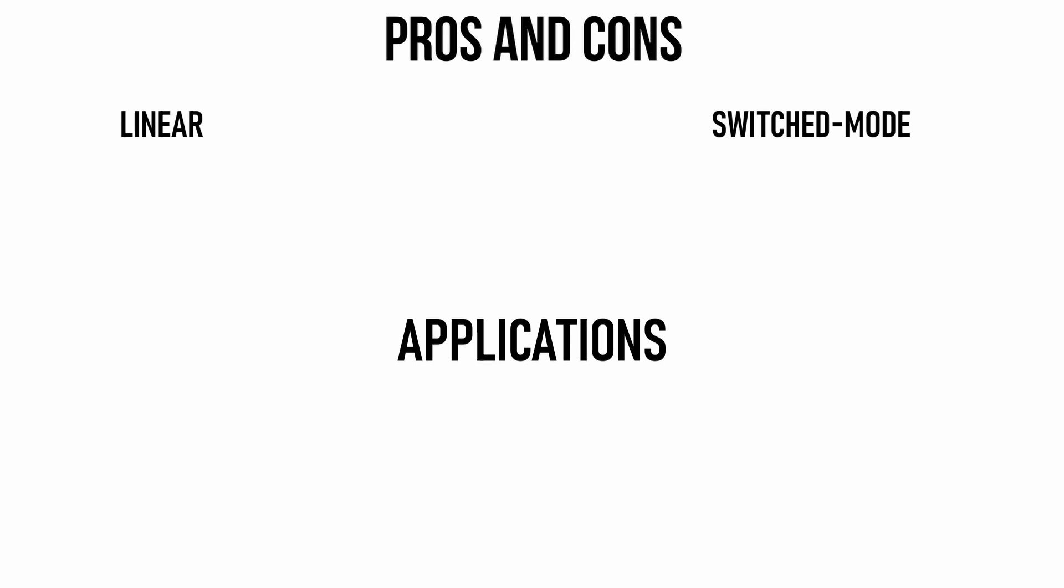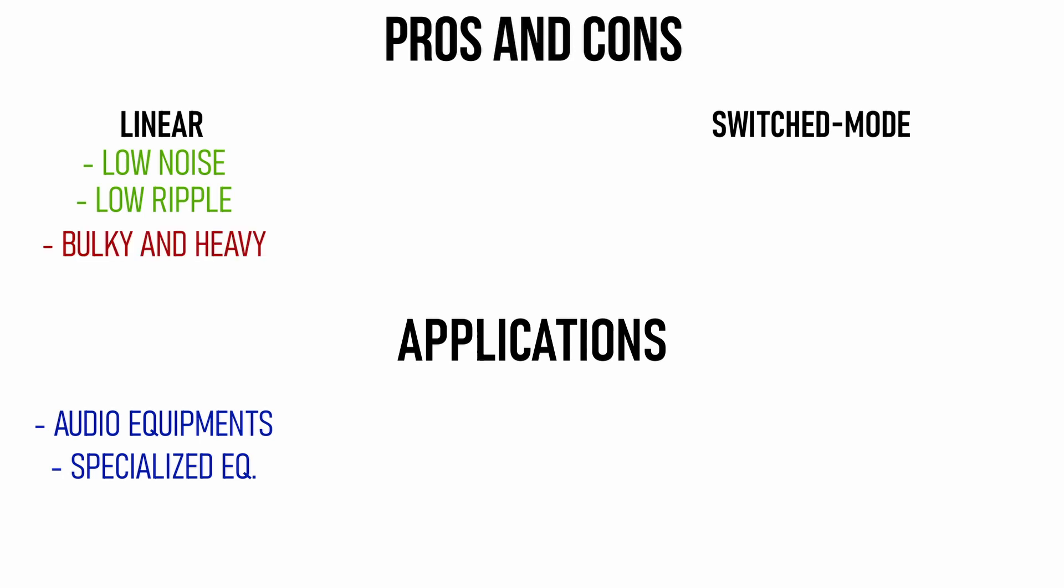So let's see the pros and cons and the applications for each of these power regulation modes. Linear power supplies were in use in every kind of equipment before the switch mode power supplies. And they are still preferred today because of their low noise, low ripple characteristics in applications such as audio and precision equipment. But their cons is that they are bulky and heavy and that bulky and heavy transformer costs a lot. So it's heavy, takes up a lot of space and very expensive. So for these reasons, switch mode power supplies came into existence.